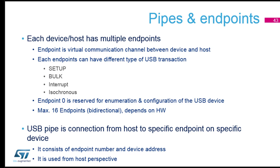Just to fix your idea on the different transfer types: bulk is like mass storage — you don't mind about timing, you just do best effort but ensure data coherence. Interrupt is something pulled regularly by the host. And isochronous is time-constrained and we don't care if one packet is missed or not — though most of the time we should receive it.